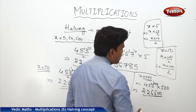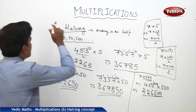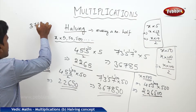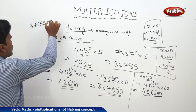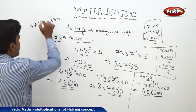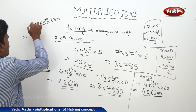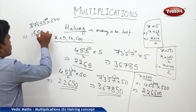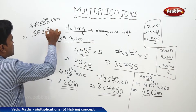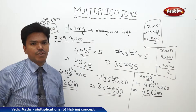One more example: 237653 × 500. How many 0s to add? Three 0s. Make it a half: 2 ones, 2 eights, 2 eights, 2 twos, 2 sixes, 2 fives, and two 0s at the end. Answer is 118826500. That's how we can apply the halving technique in case of multiplication by 5, 50, 500 and so on.